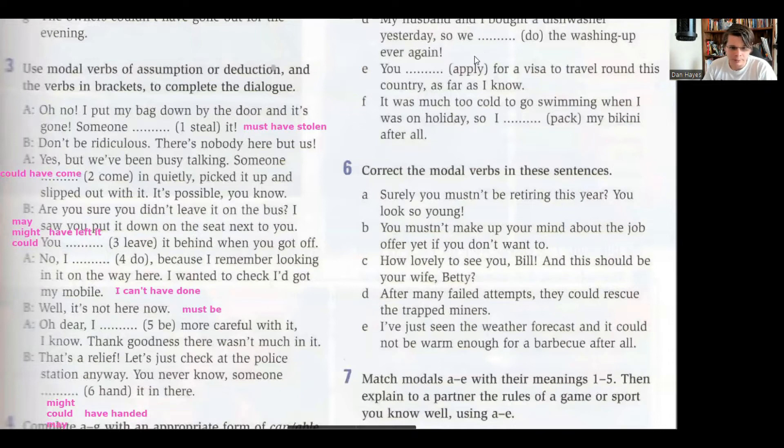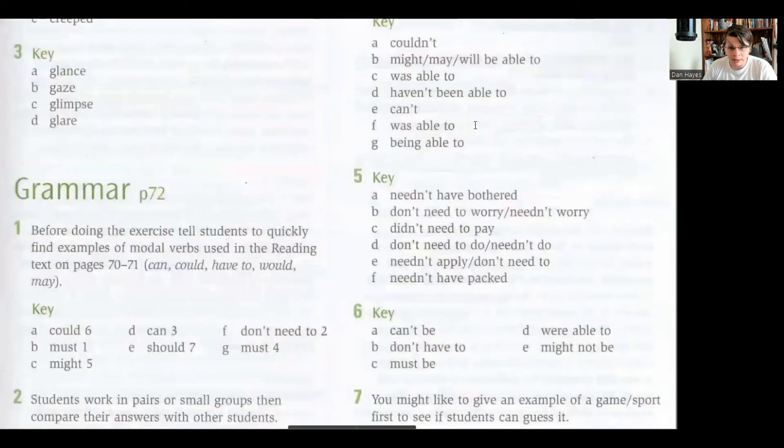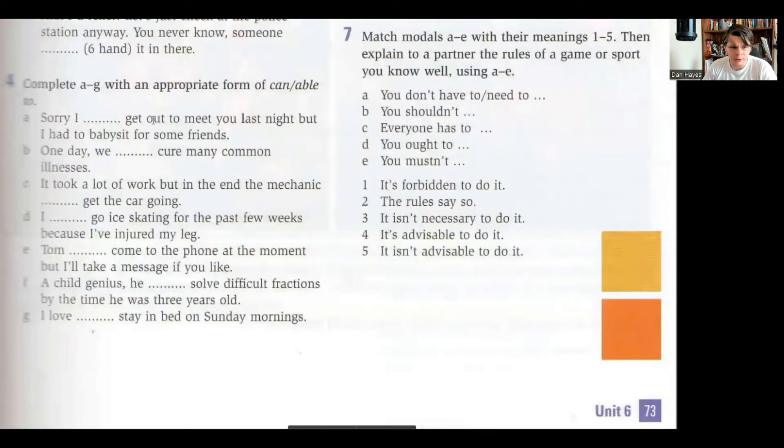All right, well done then guys. So in exercise four we have a really strange one at the beginning. It says sorry I something get out to meet you last night but I had to babysit for some friends. I really don't like this sentence. I checked the answer here in the teacher's book and it says I couldn't get out to meet you last night. Now the thing that's really weird about this, it says sorry I couldn't get out to meet you last night but I had to babysit for some friends. That sounds really strange. So my advice would be, as we say in Spanish, yeah, so everybody gets a tick there whatever you put because that's a really weird one in my opinion.